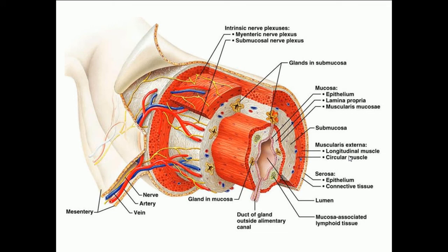The serosa or adventitia is the outermost layer. Above the diaphragm, in the esophagus, the serosa is fibrous connective tissue. Below the diaphragm, the serosa is the mesentery or visceral peritoneum, which is a serous membrane. Lining the abdominal cavity is the parietal peritoneum, usually simply called the peritoneum.